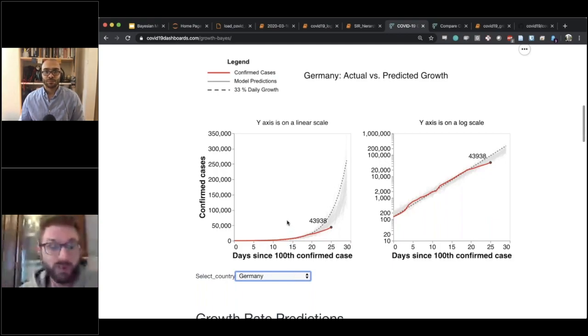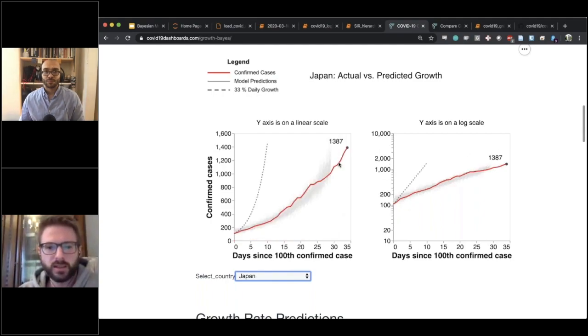So for example, Japan actually still is matched by the model fairly well, but you can see, so this is the 33% daily growth rate, the spread is way, way slower.